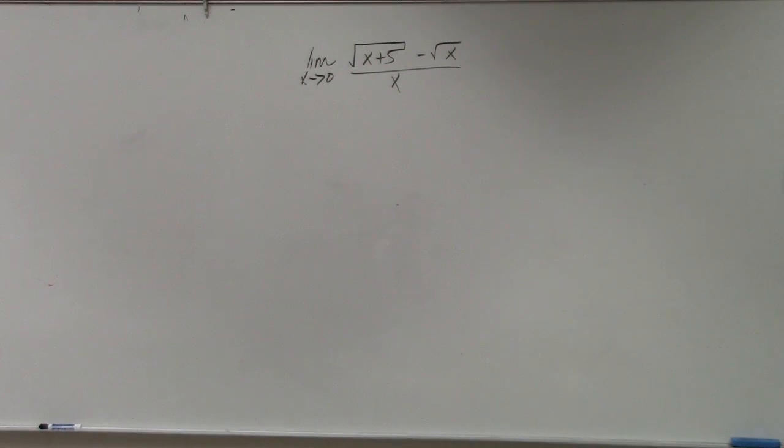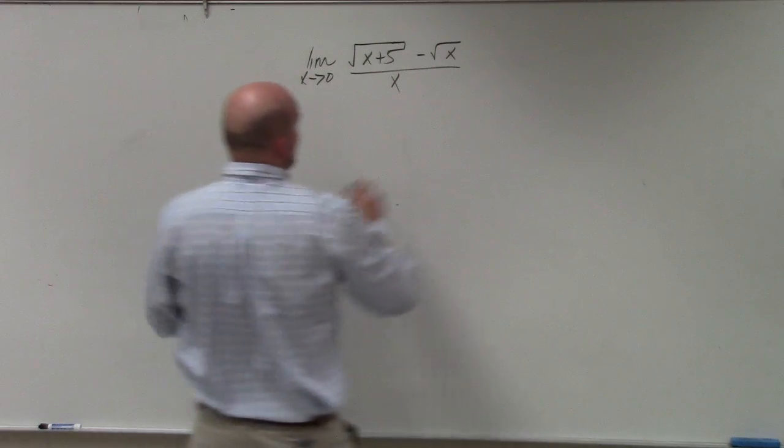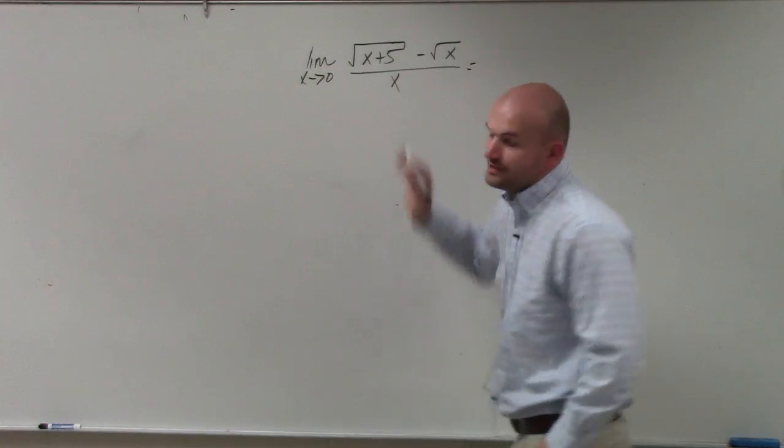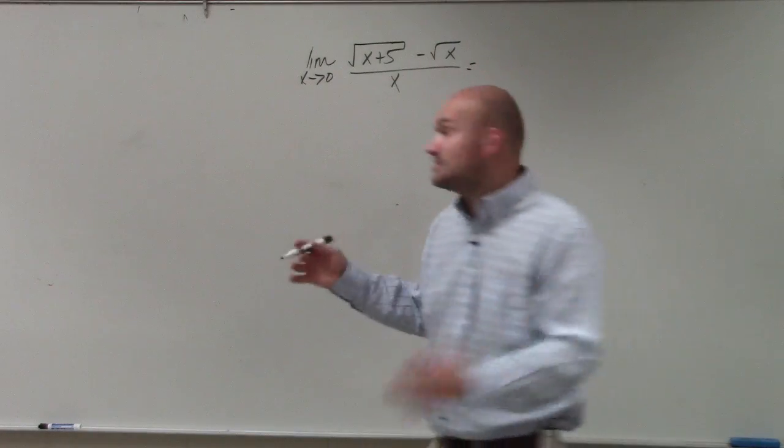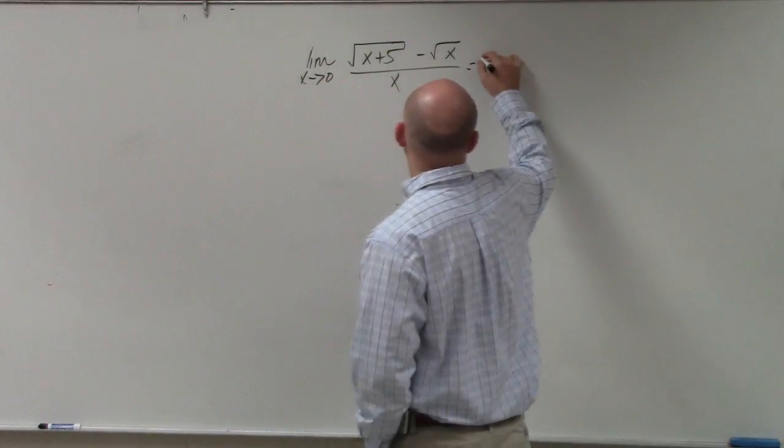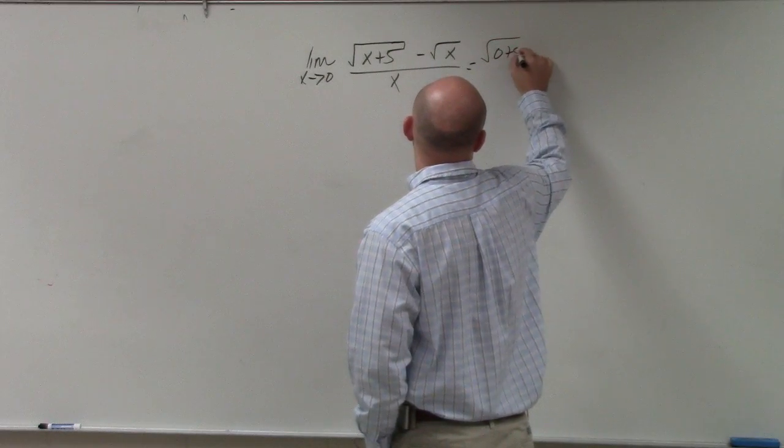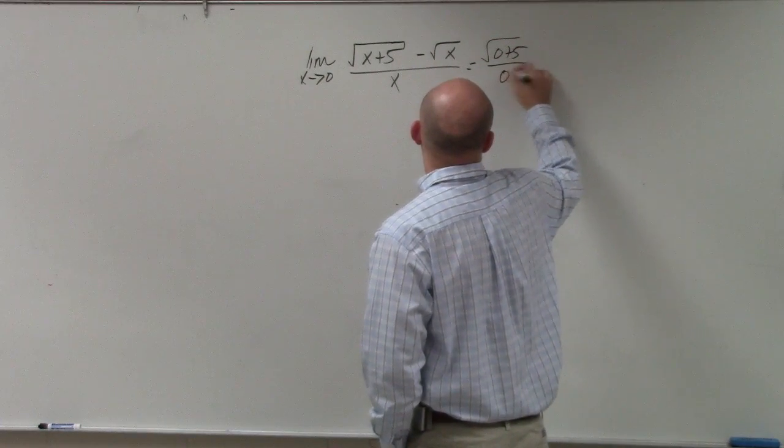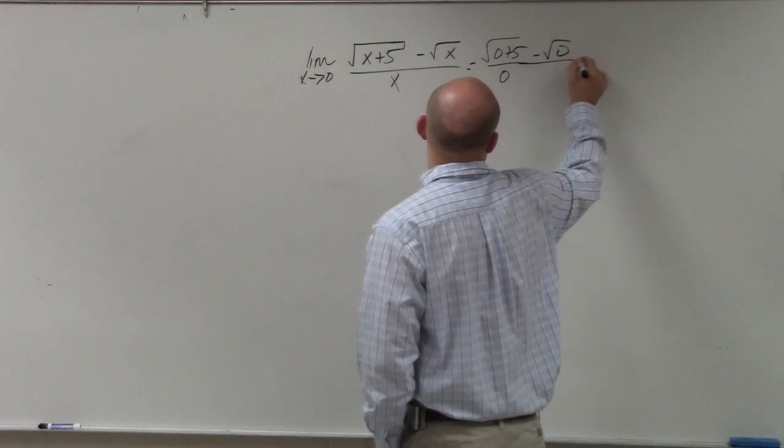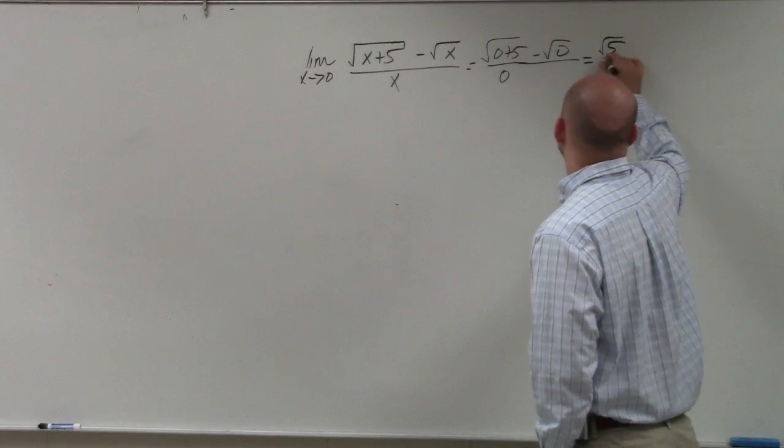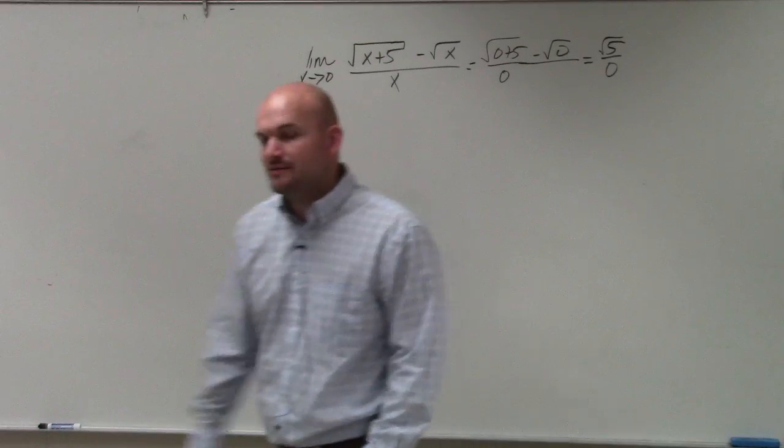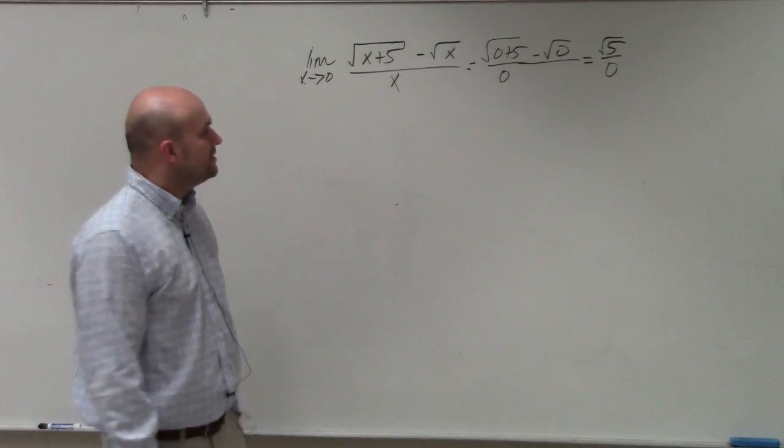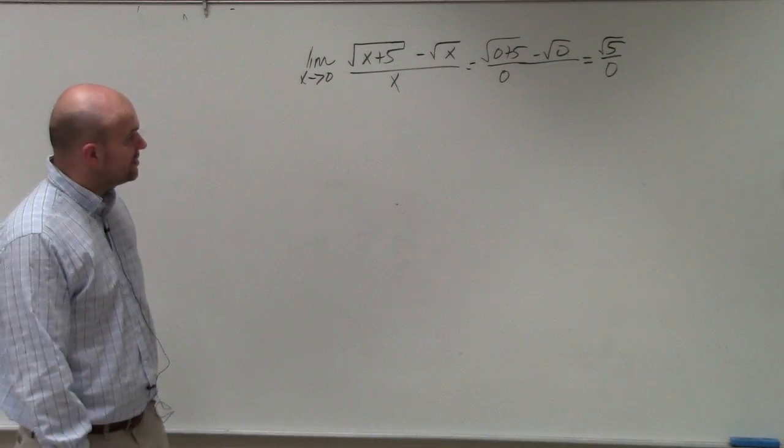All right, so in this case, ladies and gentlemen, again, we are going to have a little issue because if we apply the direct substitution, which again is the first important thing we want to do when evaluating the limit, what we see is we have the square root of 5 over 0, right? Which we're not going to be evaluating our limit for.